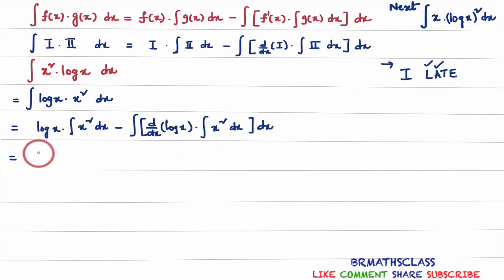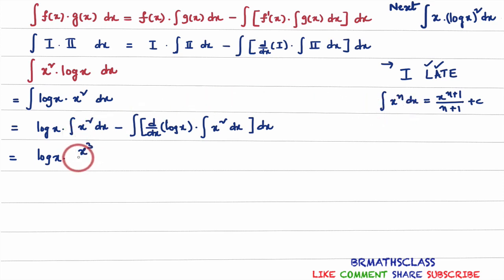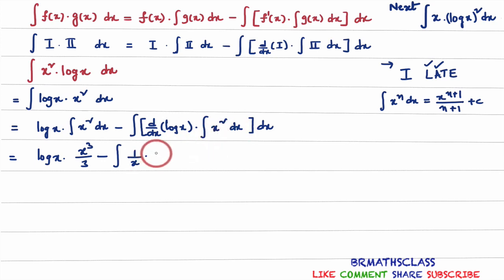If we simplify this further, log x into integral of x square dx. We know the formula: integral of x power n dx equals x power n plus 1 divided by n plus 1 plus c. Applying this formula, integral of x square dx gives x cube by 3. So we get log x into x cube by 3, minus integral of derivative of log x — which is 1 by x — into integral of x square dx, which is x cube by 3, into dx. You can observe here, x will get cancelled and x square is remaining.